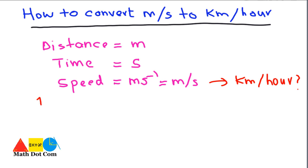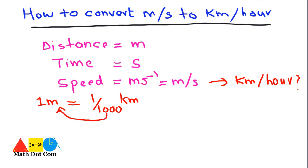Keep one thing in mind: one meter is equal to 1/1000 kilometer. And if you are asked what one kilometer equals, you move the 1000 to the other side and get one kilometer equals 1000 meters. These are the basic distance conversions to keep in mind while converting meter per second to kilometer per hour.